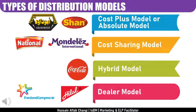The second model is the Cost Sharing model. Here, the company shares a portion of costs — for example, covering 50% of order booker salaries, or funding new vans when the distributor is asked to expand into new areas. Adding new outlets requires additional sales force — order bookers, driver-loaders, and salesmen — along with a dedicated fleet. If the distributor's ROI analysis shows the new area will be negative initially, the company steps in to share costs.